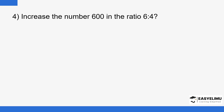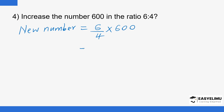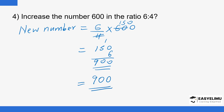We have another one: increase the number 600 in the ratio of 6 to 4. The new number is going to be 6 over 4 multiplied by 600. Four goes into 4 once and into 600 one hundred and fifty times, so 150 times 6: 6 times 0 is 0, carry 3; 6 times 5 is 30 plus 3 is 33... giving us 900. If you increase 600 in the ratio of 6 to 4, you get 900.